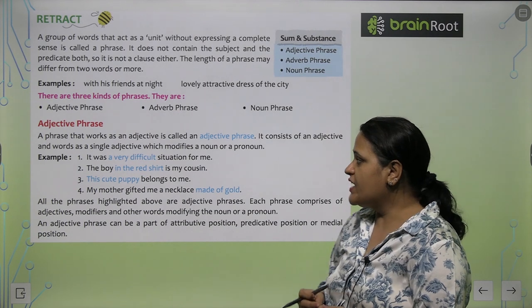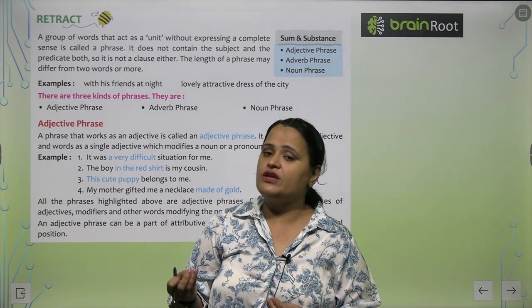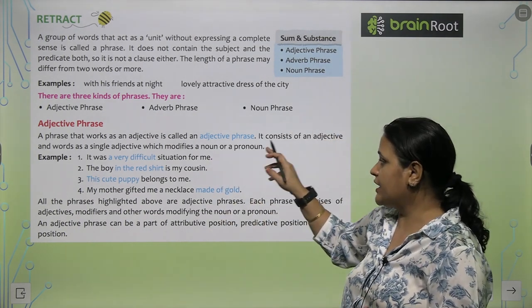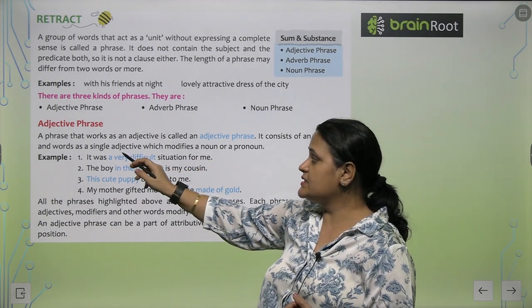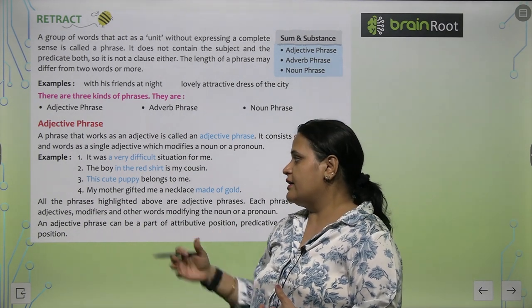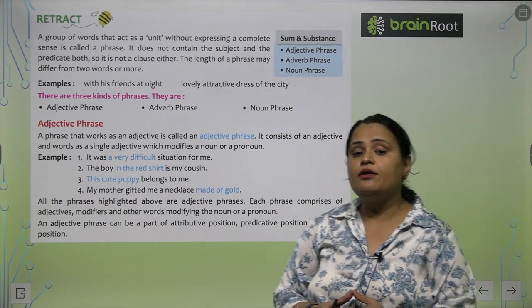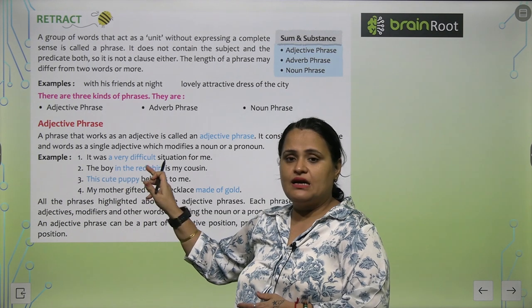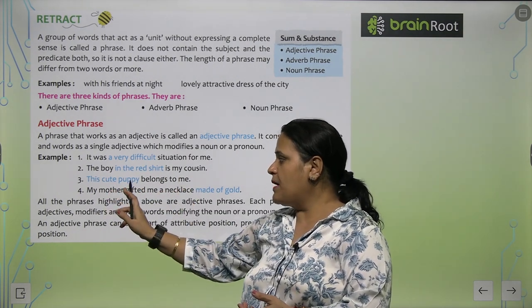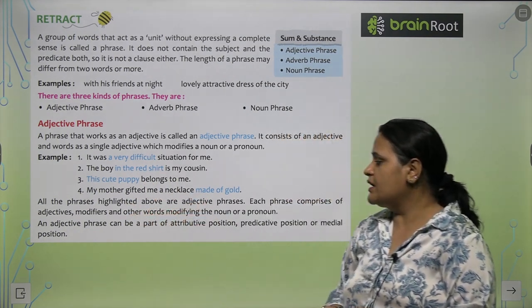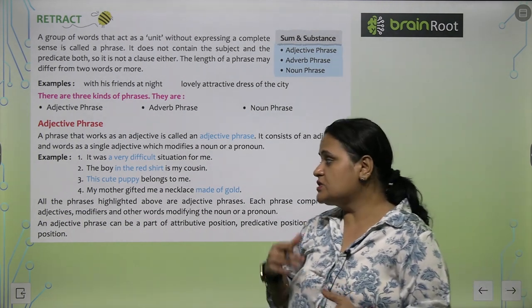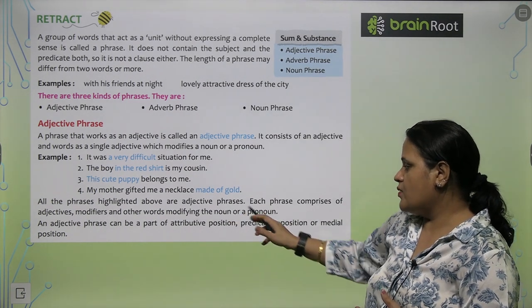What is an adjective phrase? A phrase that works as an adjective is called an adjective phrase. It shows qualities of someone or something. It consists of an adjective and associated words acting as a single adjective which modifies a noun or a pronoun. Examples: 'It was a very difficult situation for me' — 'very difficult' is the adjective phrase. 'The boy in the red shirt is my cousin.' 'This cute puppy belongs to me.' 'My mother gifted me a necklace made of gold.' All the highlighted phrases are adjective phrases, each comprising adjective modifiers and other words modifying the noun or pronoun.